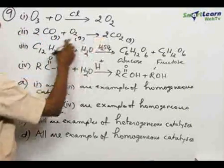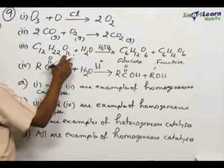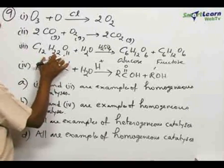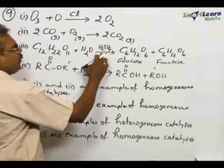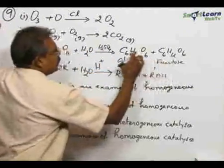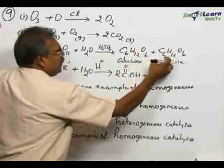carbon dioxide. Reaction 3: C12H22O11, cane sugar or sucrose, is hydrolyzed in presence of dilute sulfuric acid to get glucose and fructose, C6H12O6 glucose and C6H12O6 fructose.